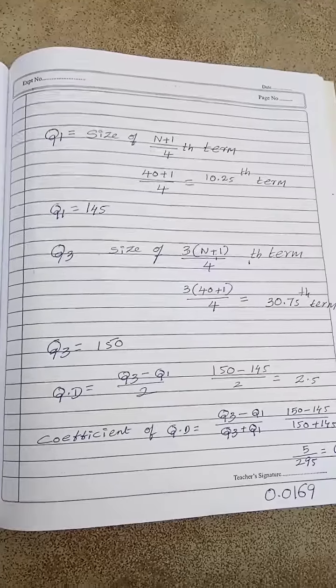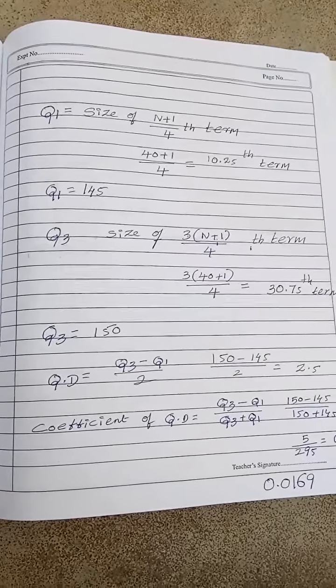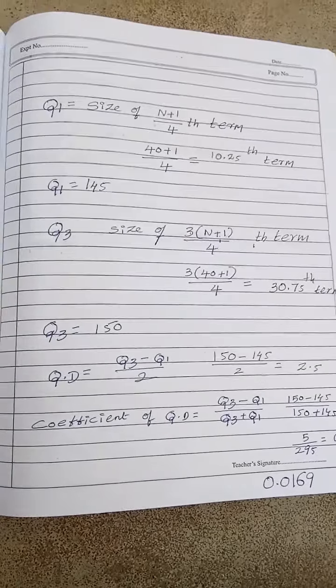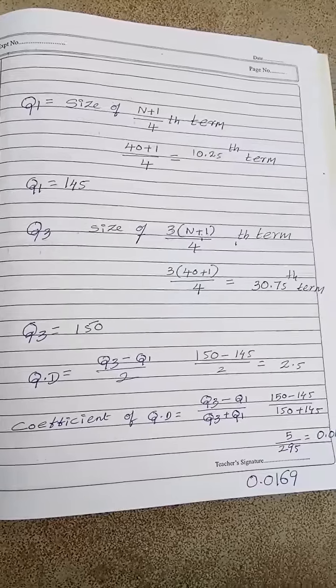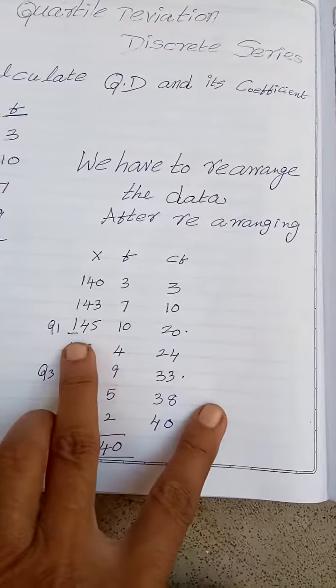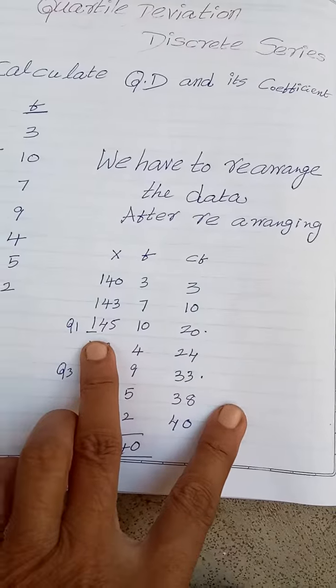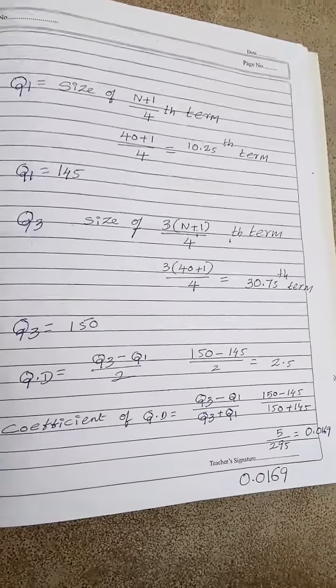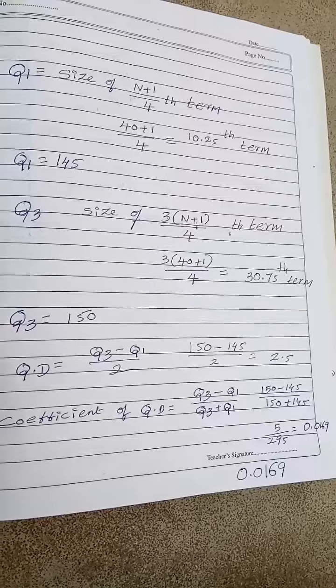Okay, you can copy the question. You have to practice. Don't neglect this. Then the formula for Q1 is size of n plus 1 by 4 term. n equals 40, 40 plus 1 by 4 means 10.25 item. 10.25 I am getting in 20, so 145 I have taken as Q1.